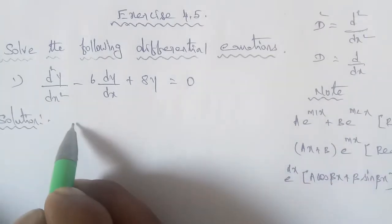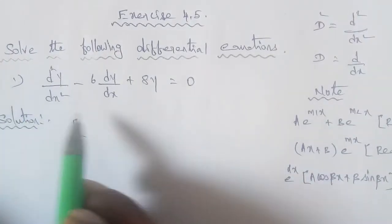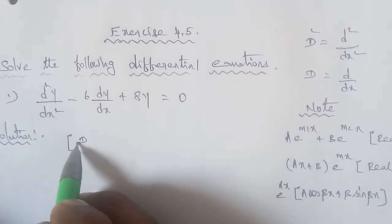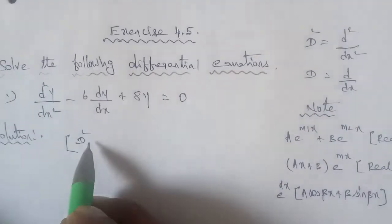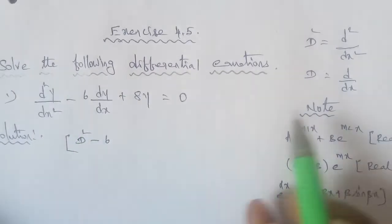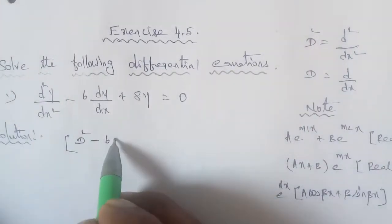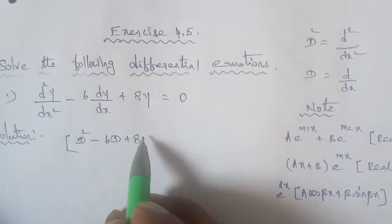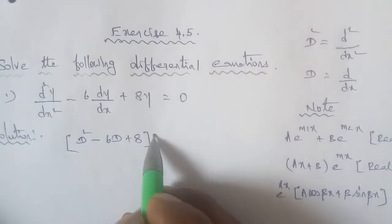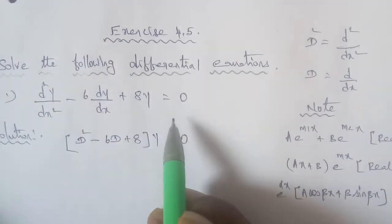So the term d²/dx² becomes capital D². So capital D² minus 6 times capital D, where d/dx is capital D, plus 8, with y taken as common and the other values removed, equals 0. This is our second-order linear differential equation in operator form.